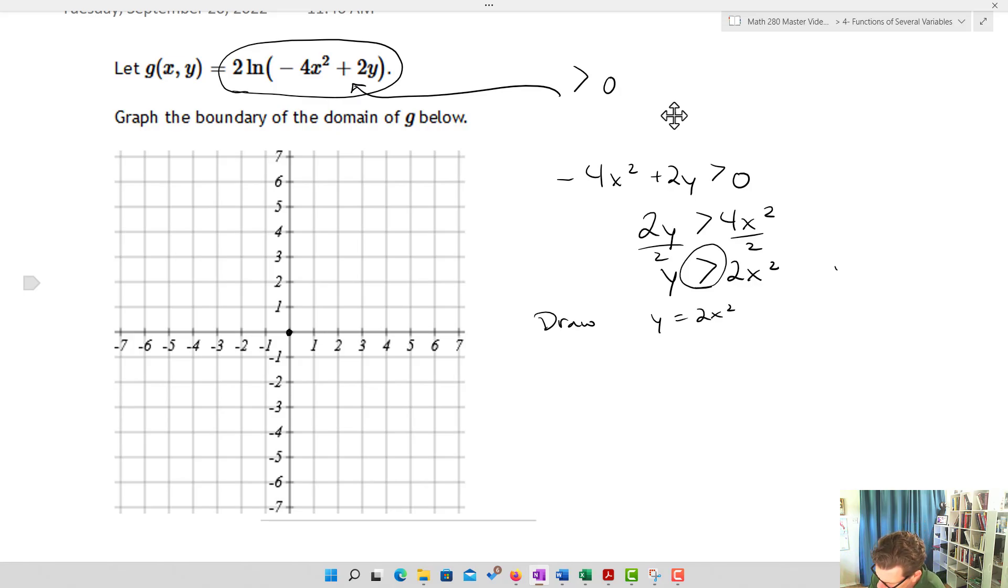So we're going to need this dotted line, and it's 2x squared. So if I go x is 1, that's going to be up 2, right? And this is just going to then help me draw my graph using that dotted line.